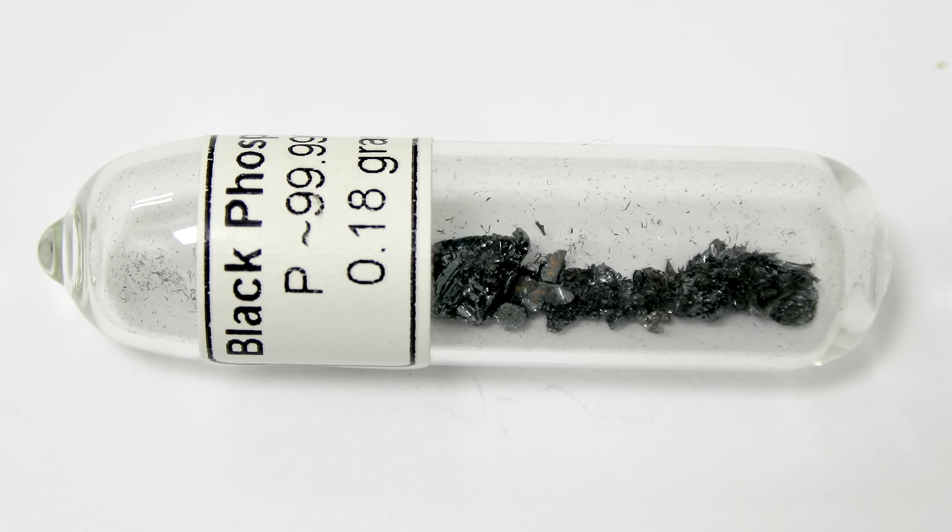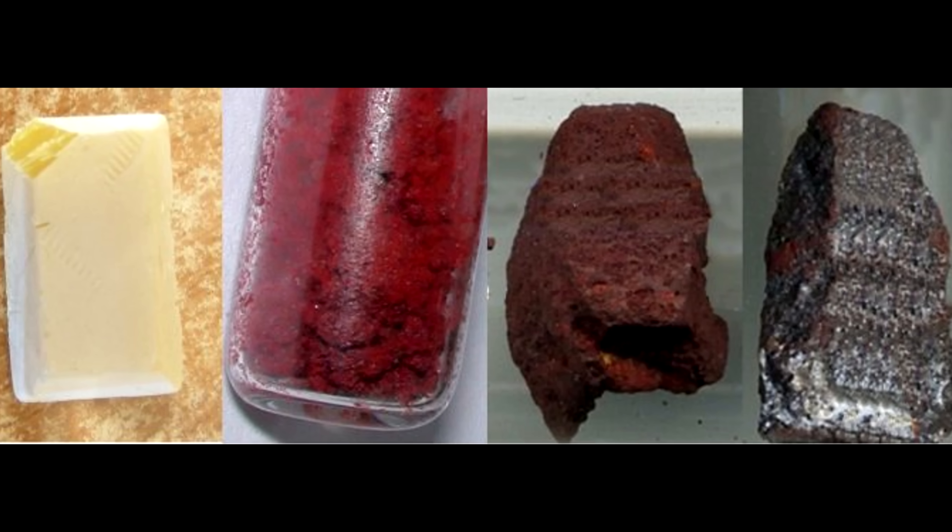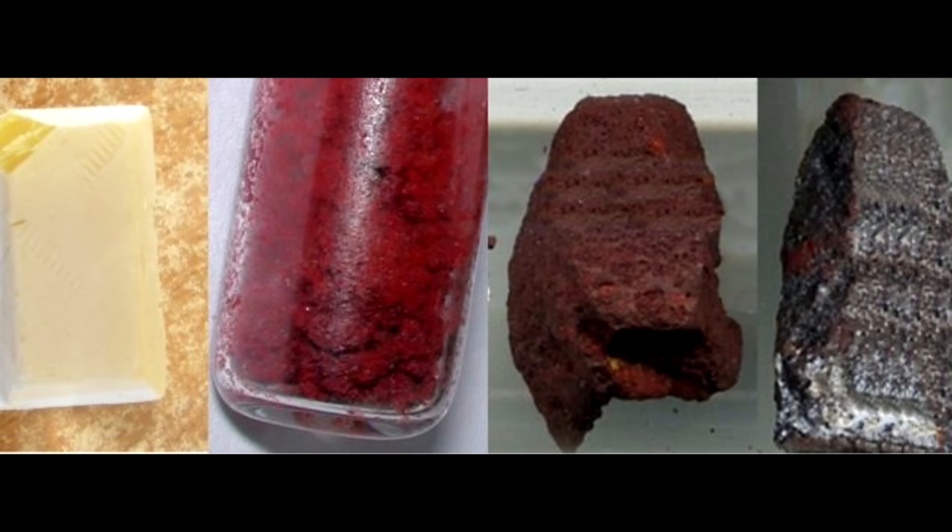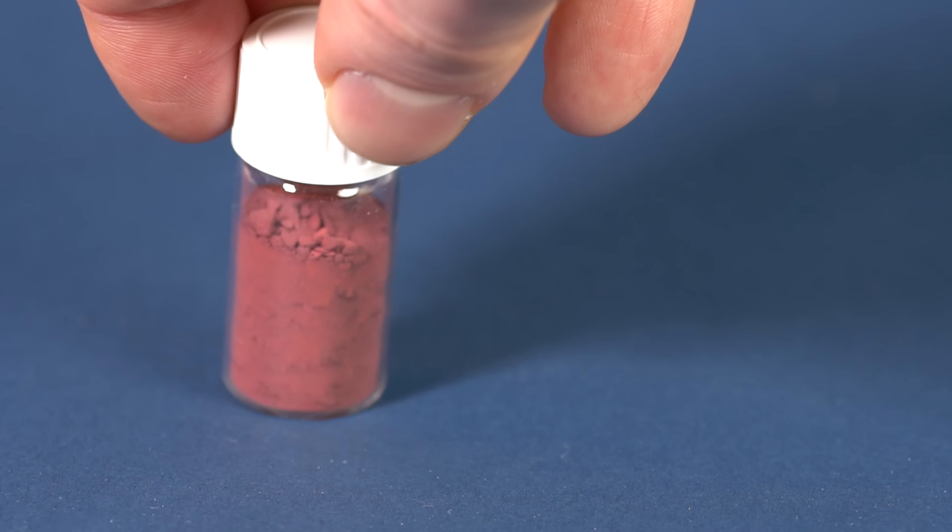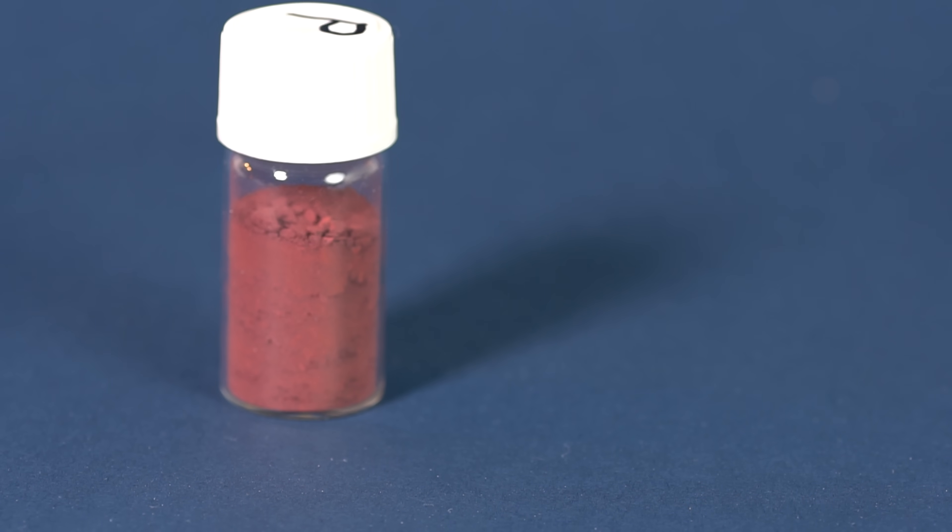There are two more forms of phosphorus: black and metallic phosphorus. However, unfortunately, they are very difficult to find, especially getting hands on them for conducting experiments.